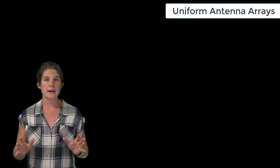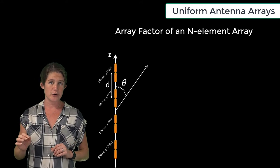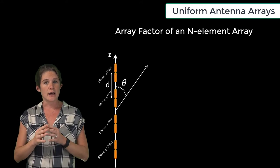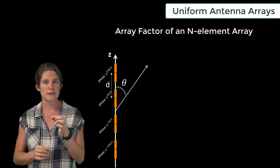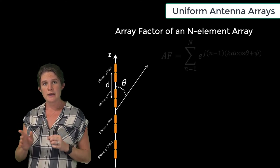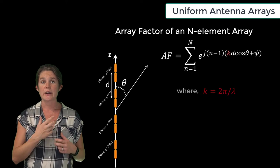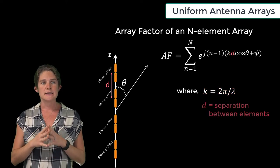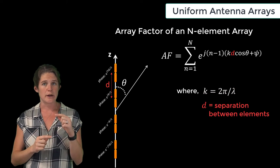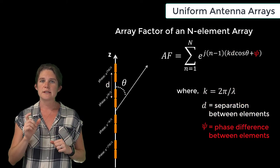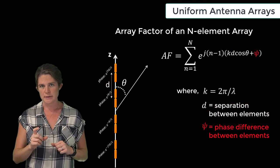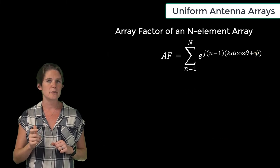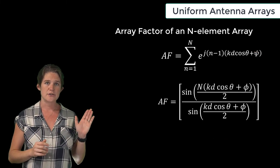The array factor of an N-element uniform antenna array arranged in a line along the z-axis, centered at the origin, and viewed from the far field is given by this equation, where k is the wave number equal to 2π over λ, d is the separation between neighboring elements, and φ is the phase difference between neighboring elements. This may also be written in terms of sines as shown here.